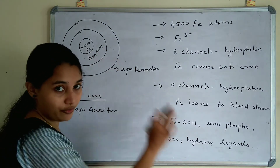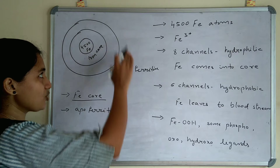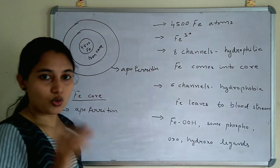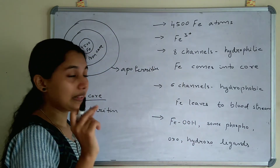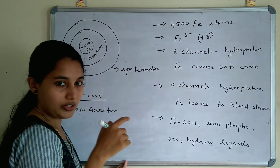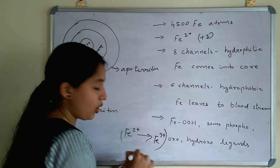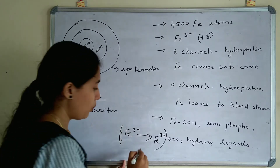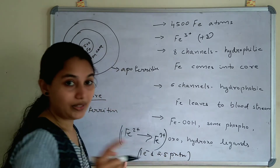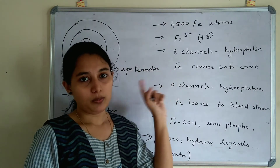In the iron core, 4,500 Fe atoms and some phospho, oxo, and hydroxo ligands are present, and the external coverage is called apoferritin. Fe is in the Fe3+ (plus 3) oxidation state. Fe2+ is converted to Fe3+ on oxidation, and 1 electron and 2.5 protons are produced per Fe2+ in the ferritin reaction.